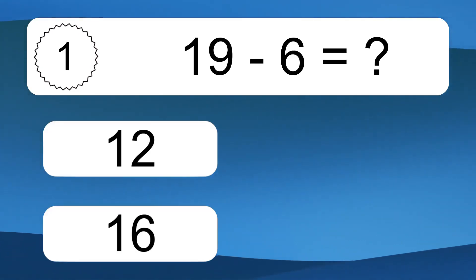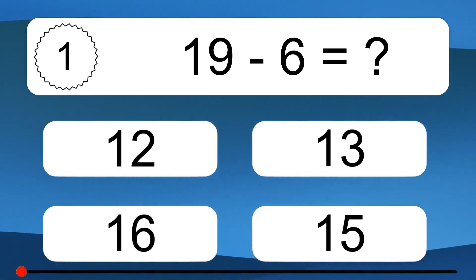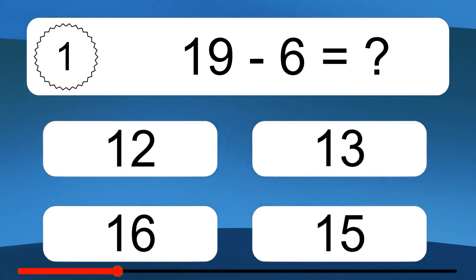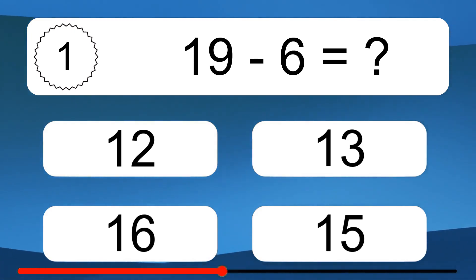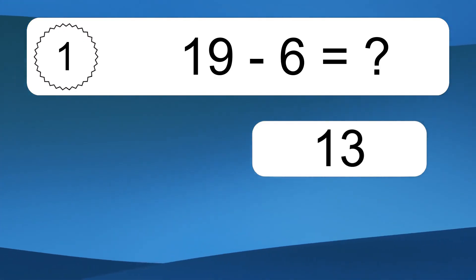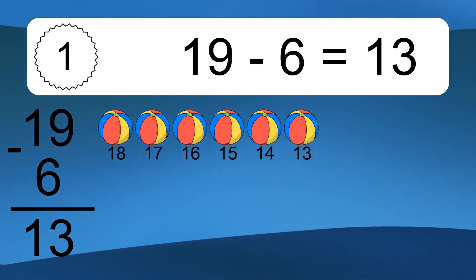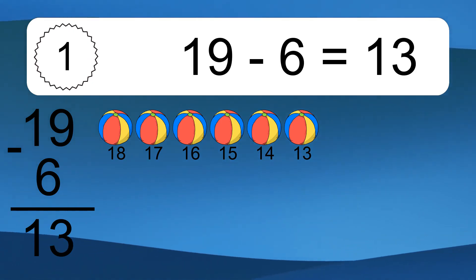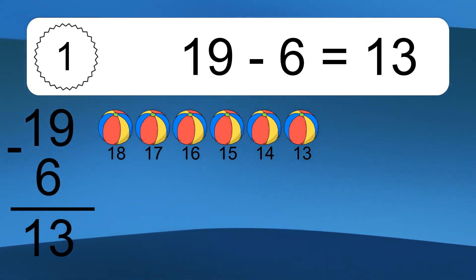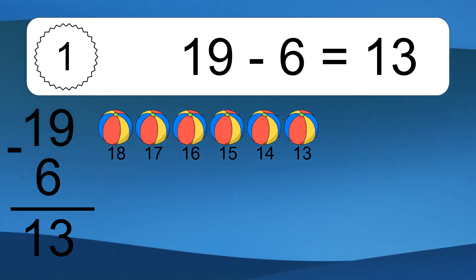19 minus 6 equals what? 19 minus 6 equals 13. Let's count it. 18, 17, 16, 15, 14, 13.